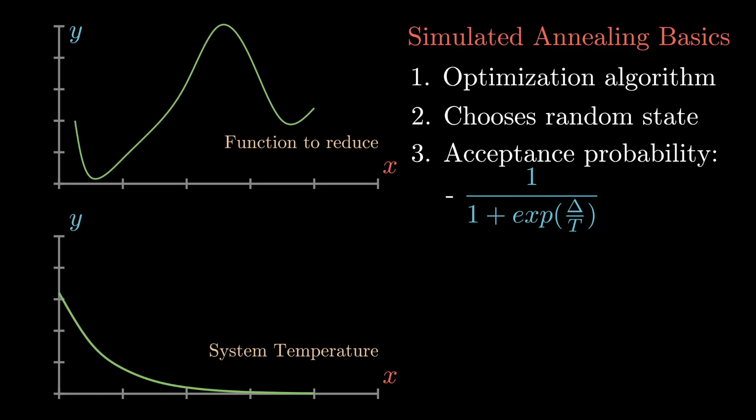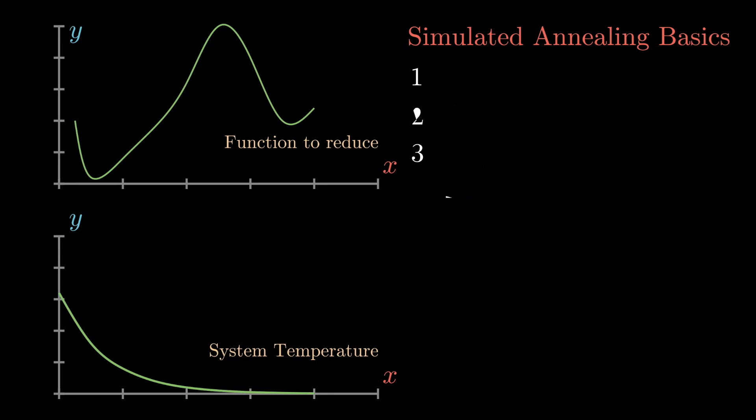And it only accepts states which actually make the whole system better. So let's go ahead and look at a simple example. So we first start by choosing point X1 and then point X2. As you can see from the picture, point X2 is at a lower point than point X1. So this new state is accepted. Then we start by choosing point X3 and we compare it to point X2.